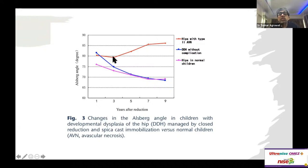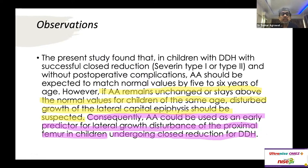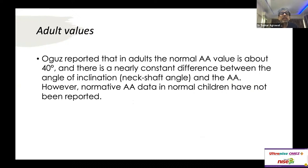In children who underwent lateral growth arrest, the Olsberg angle decreases by one or two degrees over the next three years and then suddenly starts increasing, reaching 86 degrees by age ten. This is the key difference: lateral growth arrest leads to an Olsberg angle of 86 degrees at age ten, versus approximately 68–69 degrees in milder AVN or normal hips. The authors concluded that the Olsberg angle can serve as an early predictor for lateral growth disturbance in the proximal femur of children undergoing closed reduction for DDH.